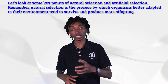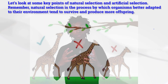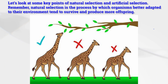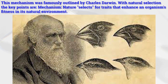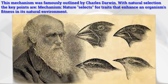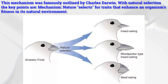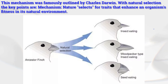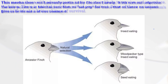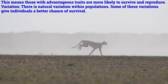Let's look at some key points of natural selection and artificial selection. Remember, natural selection is the process by which organisms better adapted to their environment survive and produce more offspring — famously outlined by Charles Darwin. Key point number one — mechanism: nature selects for traits that enhance an organism's fitness in its natural environment, meaning those with advantageous traits are more likely to survive and reproduce.